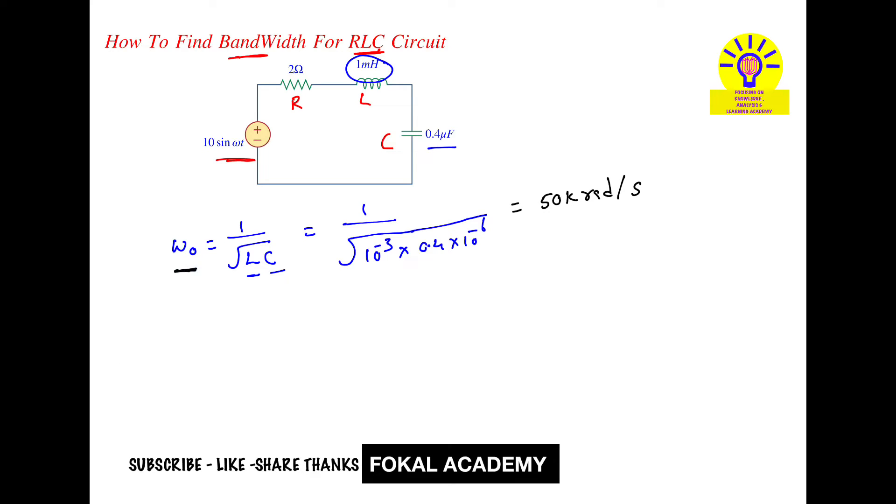This is the angular frequency, which is why the units are radians per second. But according to the problem, we want bandwidth. For finding bandwidth, first find the quality factor, then we can easily find the bandwidth. Quality factor Q is equal to